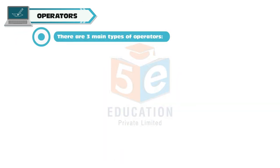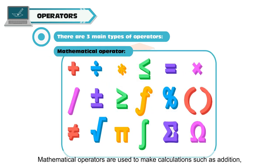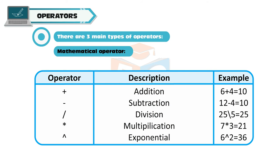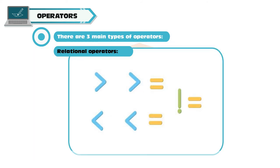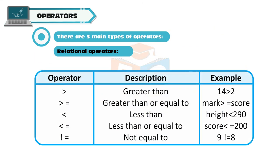Operators: Operators are used to do calculations using variables and constants and perform other operations. There are three main types of operators. Mathematical Operator: Mathematical operators are used to make calculations such as addition, subtraction, multiplication, division, etc. The mathematical operators are plus for addition, minus for subtraction, forward slash for division, asterisk for multiplication, and caret for exponential.